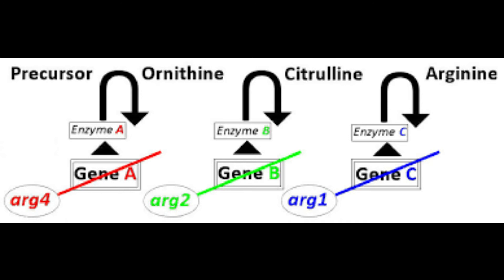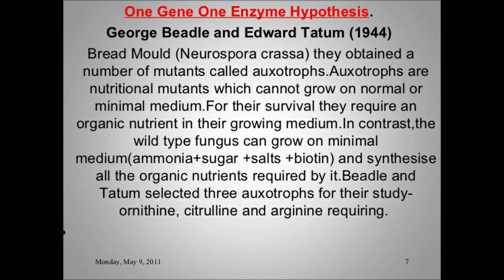The substrate in the biochemical pathway begins with glutamate, which is converted via cluster 1 to ornithine, ornithine to citrulline, citrulline into argininosuccinate, and then finally to arginine.